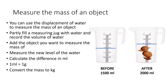We can use this concept of displacement to measure the mass of an object. If we take a known volume of water and add an object, the water level will rise. For example, with a water jug containing 1,500 millilitres of liquid, we put in the duck and it increases the water level to 2,000 millilitres. The difference — 500 millilitres — is the volume of the object. One millilitre equals one gram, so 500 millilitres equals 500 grams. Converting to kilograms by dividing by 1,000 gives us 0.5 kilograms.